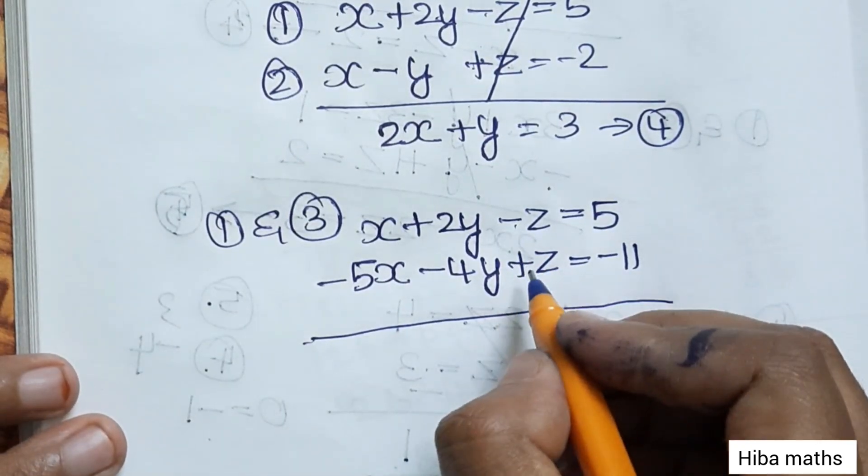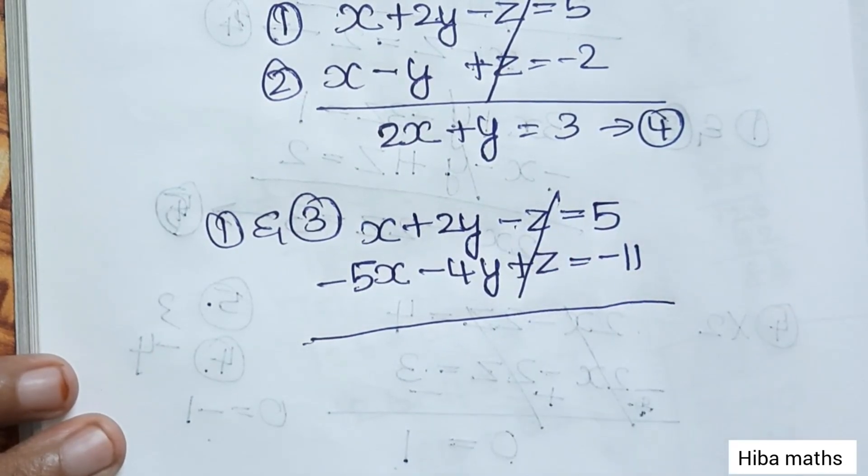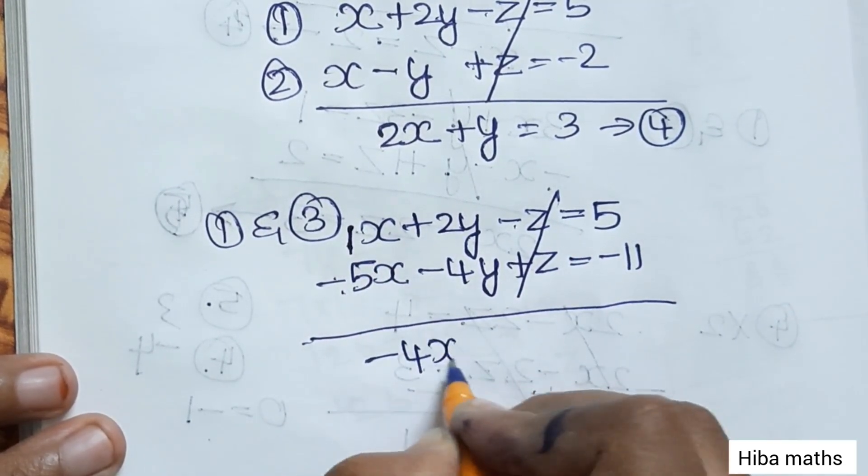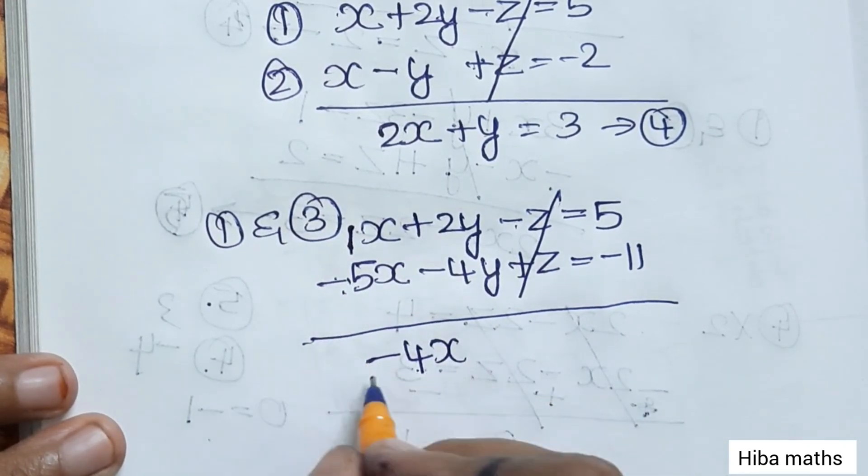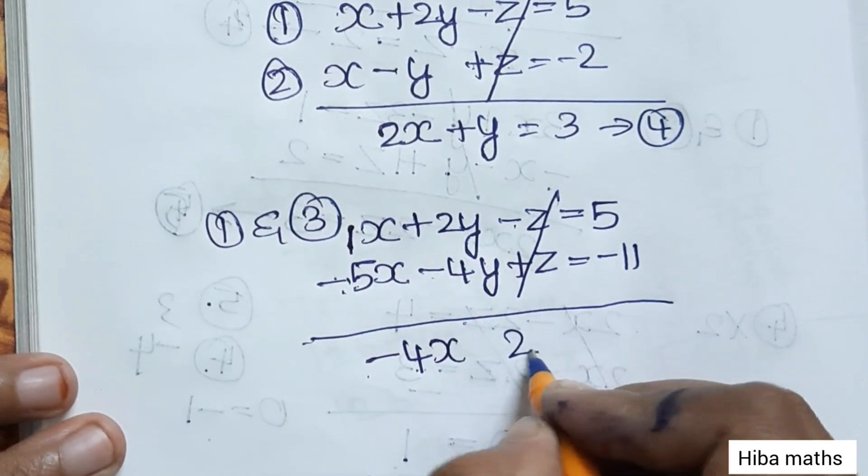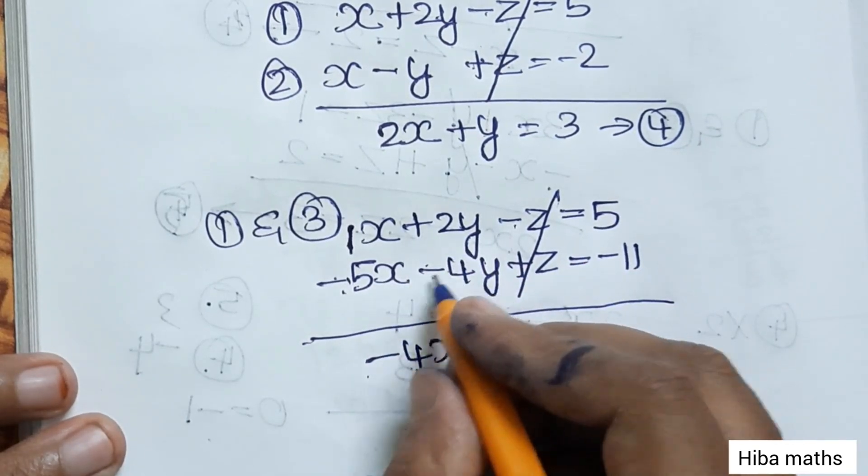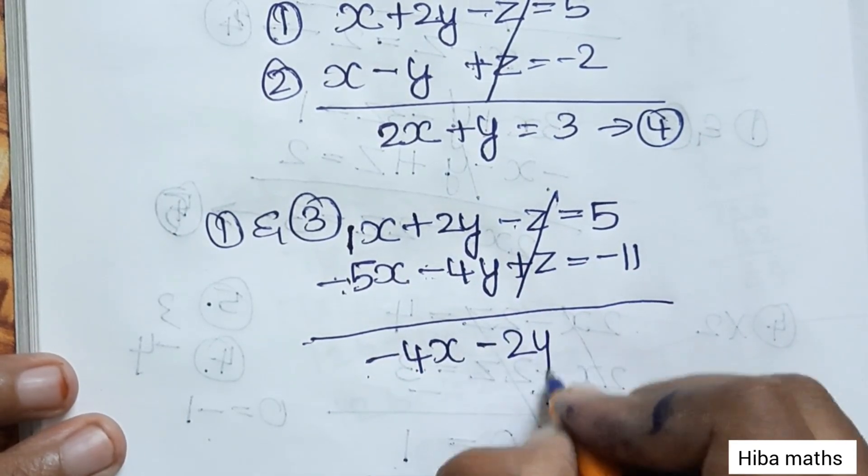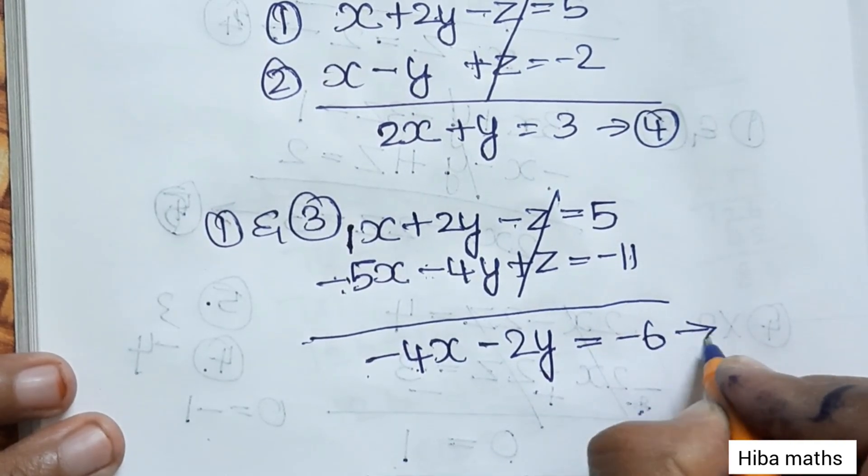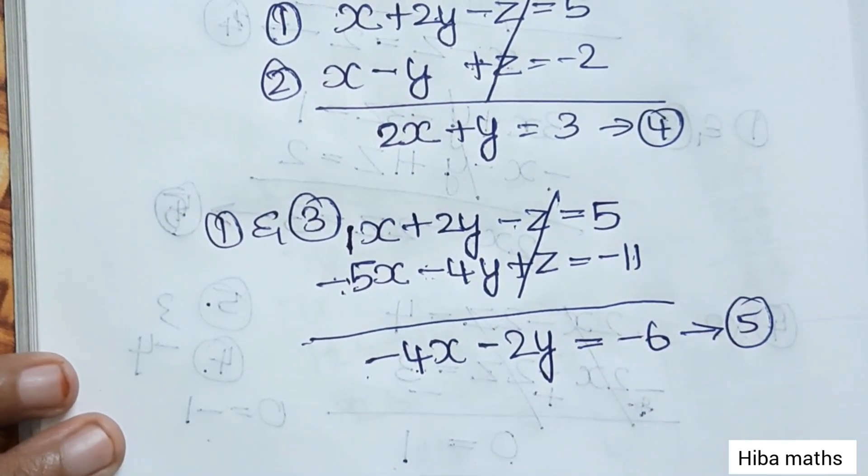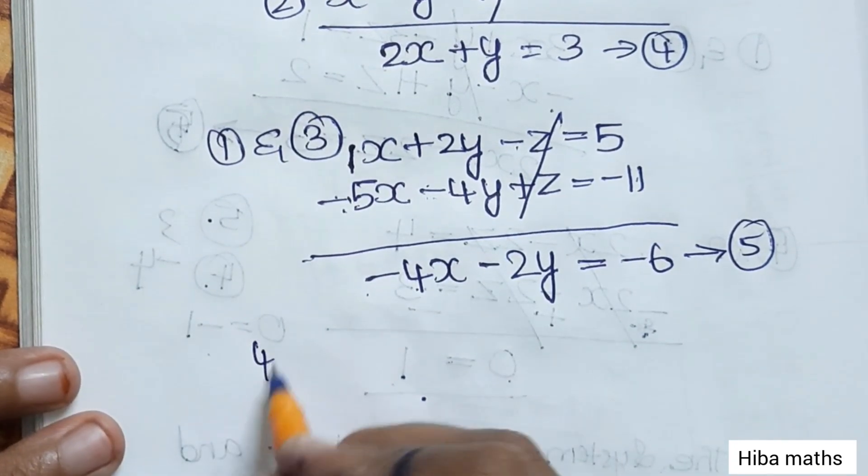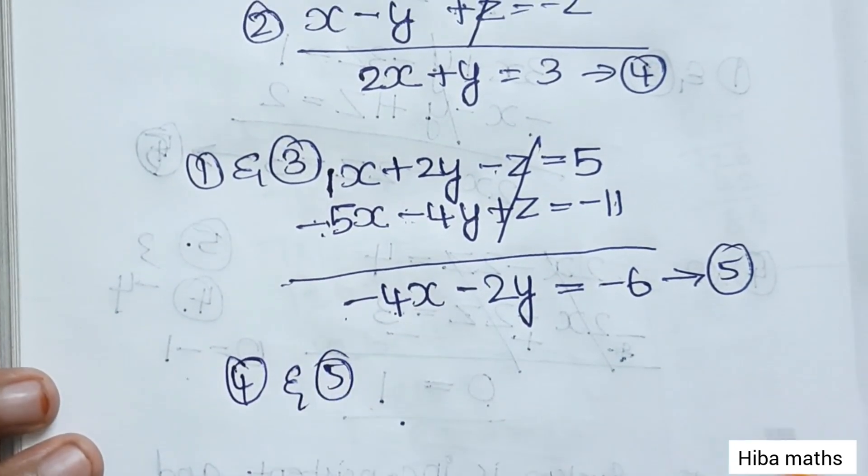Plus z and minus z will cancel. From minus 5 and 1, minus 4x. If you multiply the second equation by 5, then add: 5 times 1 is 5, 5 times 2y is 10y, 5 times minus z is minus 5z. This becomes the fifth equation.